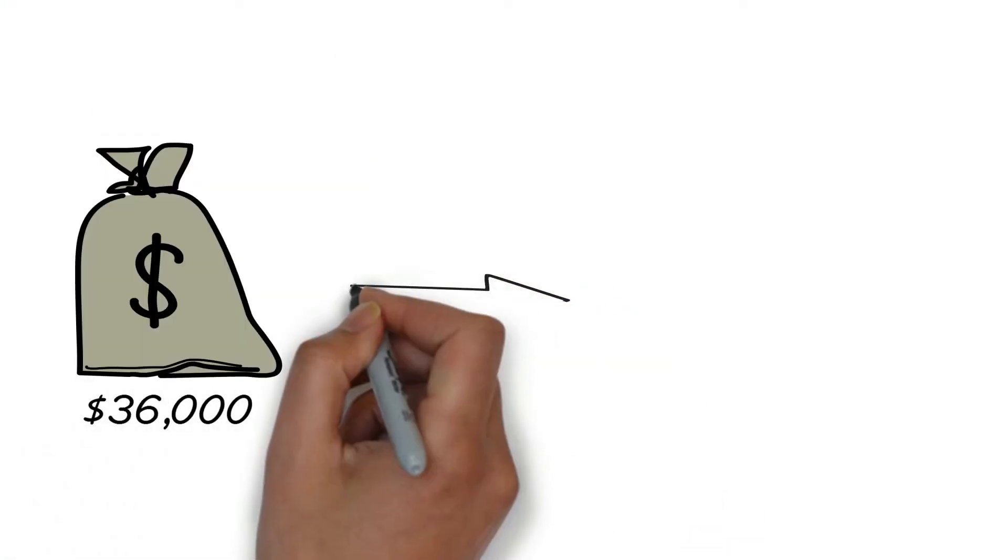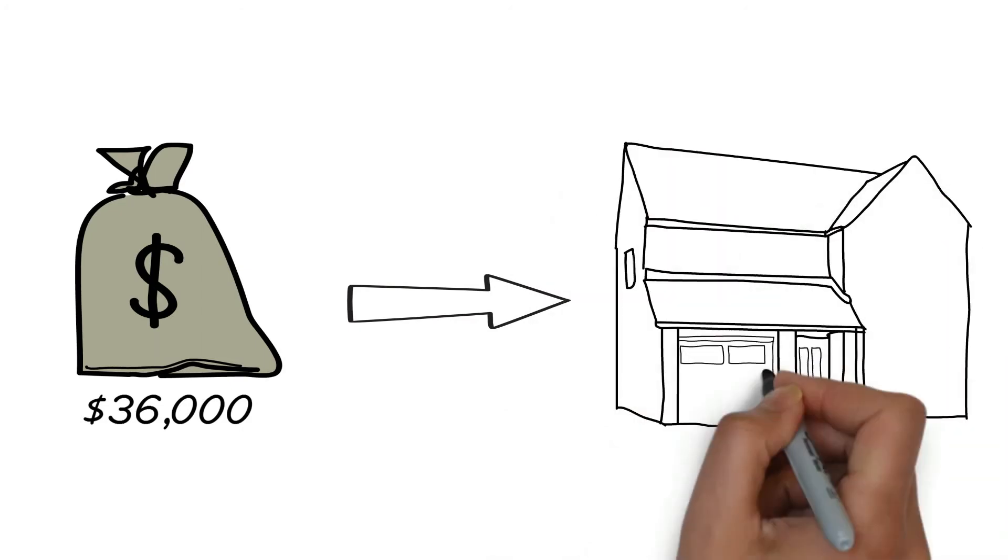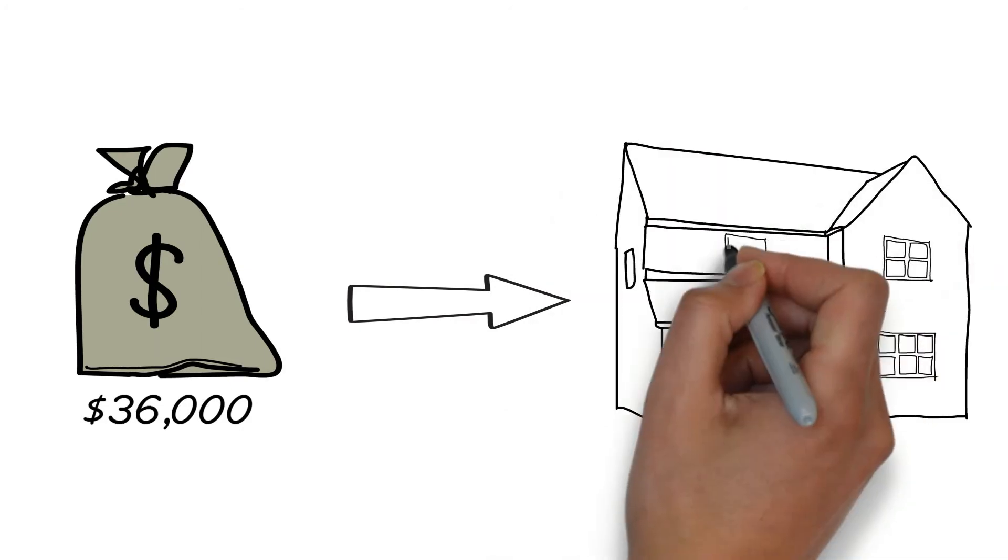So what does this mean? This means that if two years prior to filing a Medicaid application, you gave your son $36,000 to put a down payment on a house, let's say, this could create a problem.